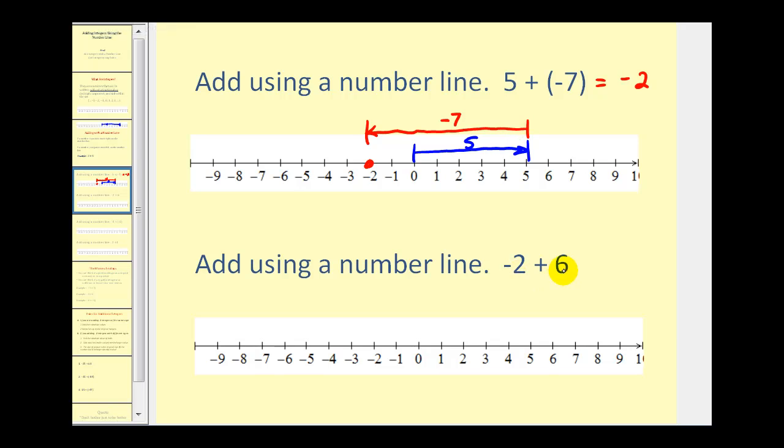Here we have negative two plus six. So for the negative two, we'll start at zero and move to the left two units.